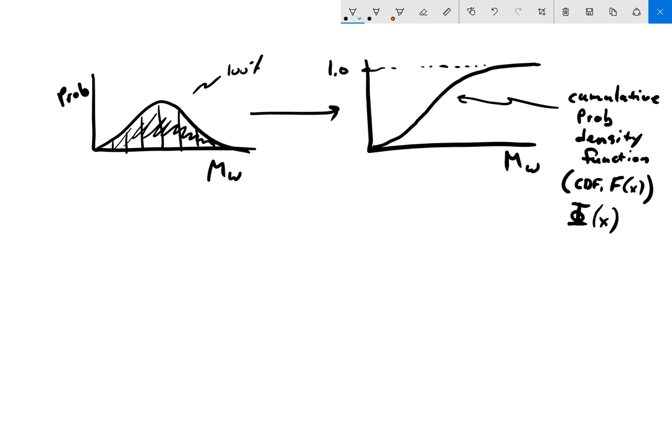This integrated function has a special name, called a cumulative probability density function or CDF. The CDF is very useful because as engineers, we often don't really care about what the probability is that a parameter equals something. We're more concerned about whether it exceeds it or doesn't exceed it. The CDF is what's going to help us with the issues of exceedance or non-exceedance.